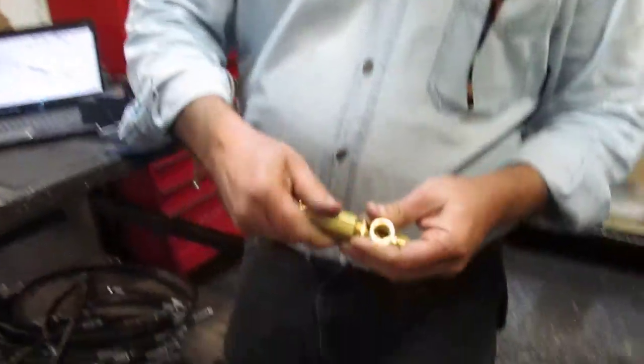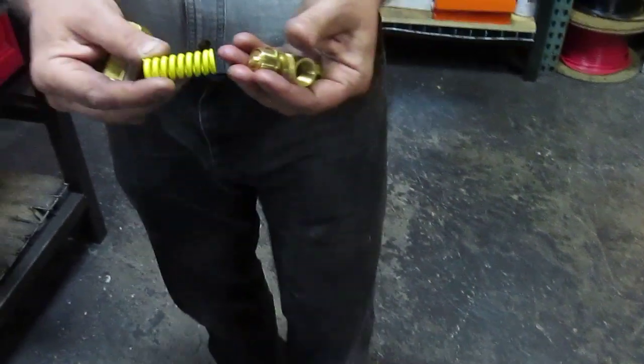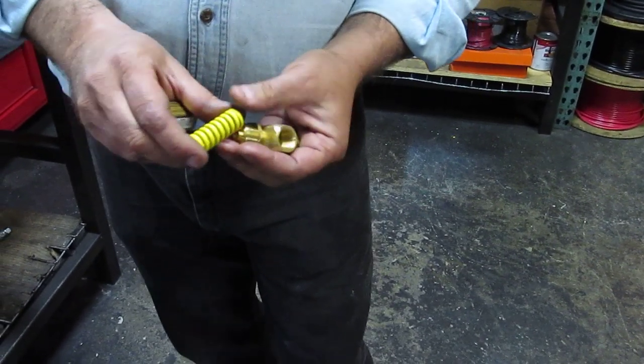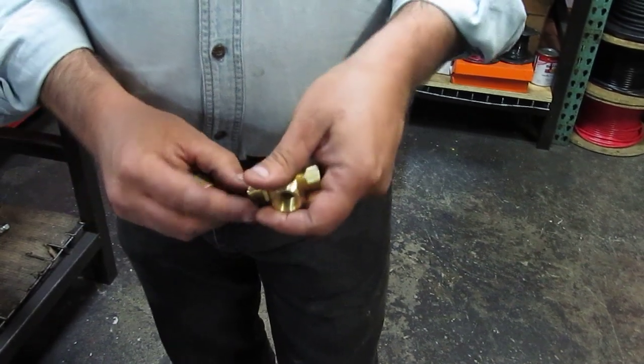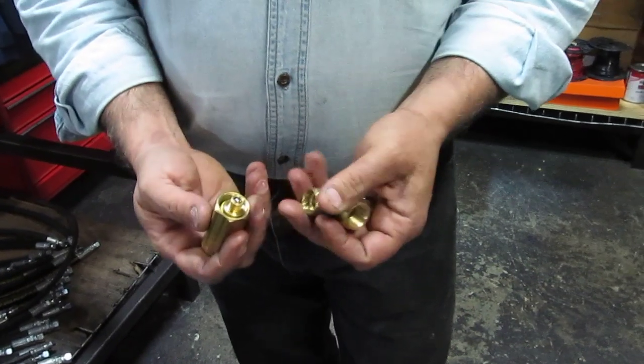Because every unloader or every pressure regulator has a spring inside, which is designed to handle so much pressure as far as getting compressed. By having this inside of the cap, and as it sits around this thrust plate...